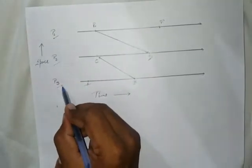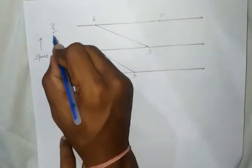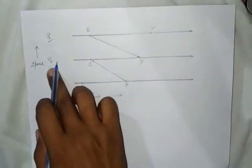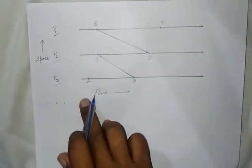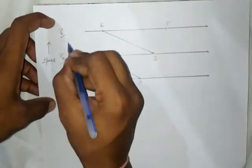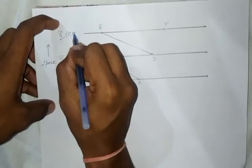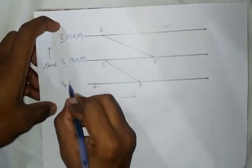Now let us see the implementation of vector clocks. As you can see, this is a space-time graph and we have three processes P1, P2, and P3. Events E and F are associated with process P1, C and D are associated with process P2, and A and B are associated with process P3. The time flows from left to right, and the initial timestamp of each process is [0, 0, 0].